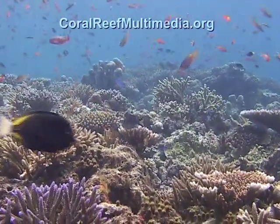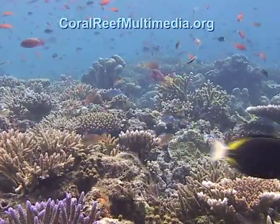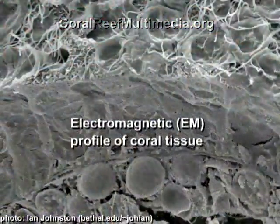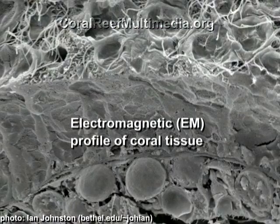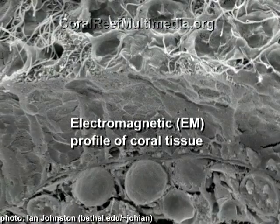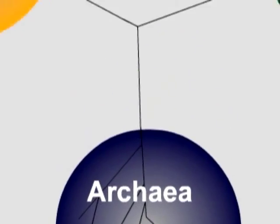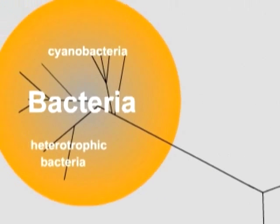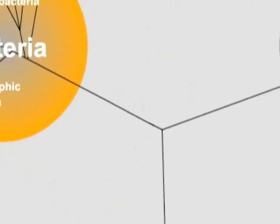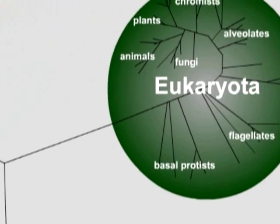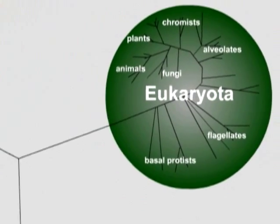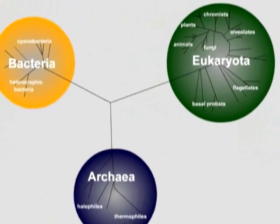The rich diversity of organisms associated with coral reefs begins at the microscopic scale within the coral animal. The coral colony is a symbiotic community comprised of all three domains of life, called the coral holobiont. This relationship is essential to building and maintaining coral reefs.